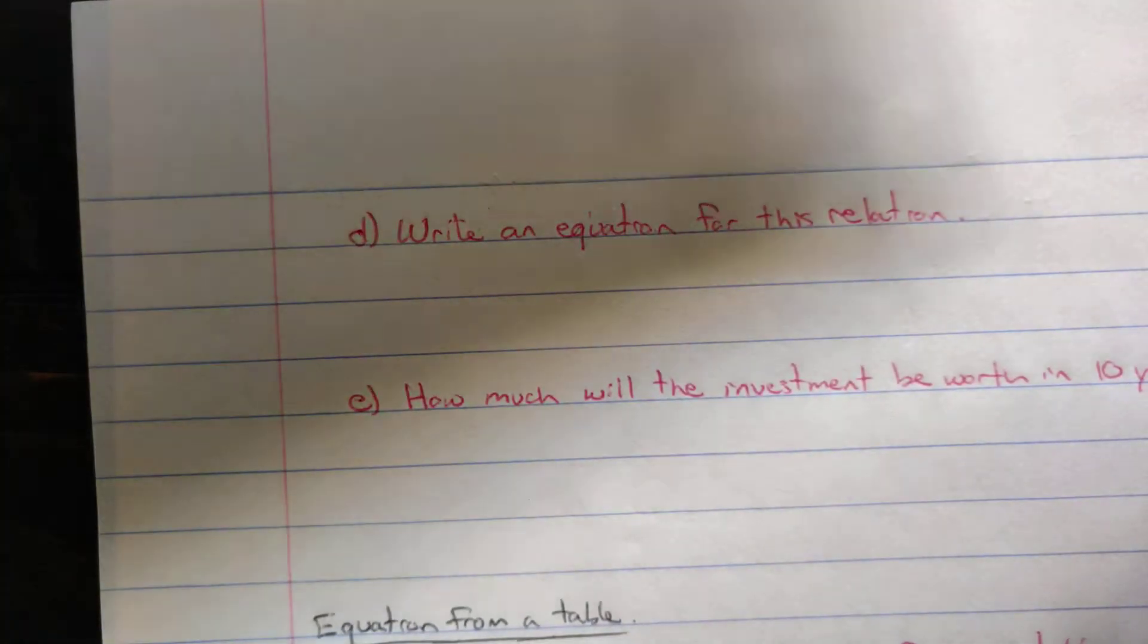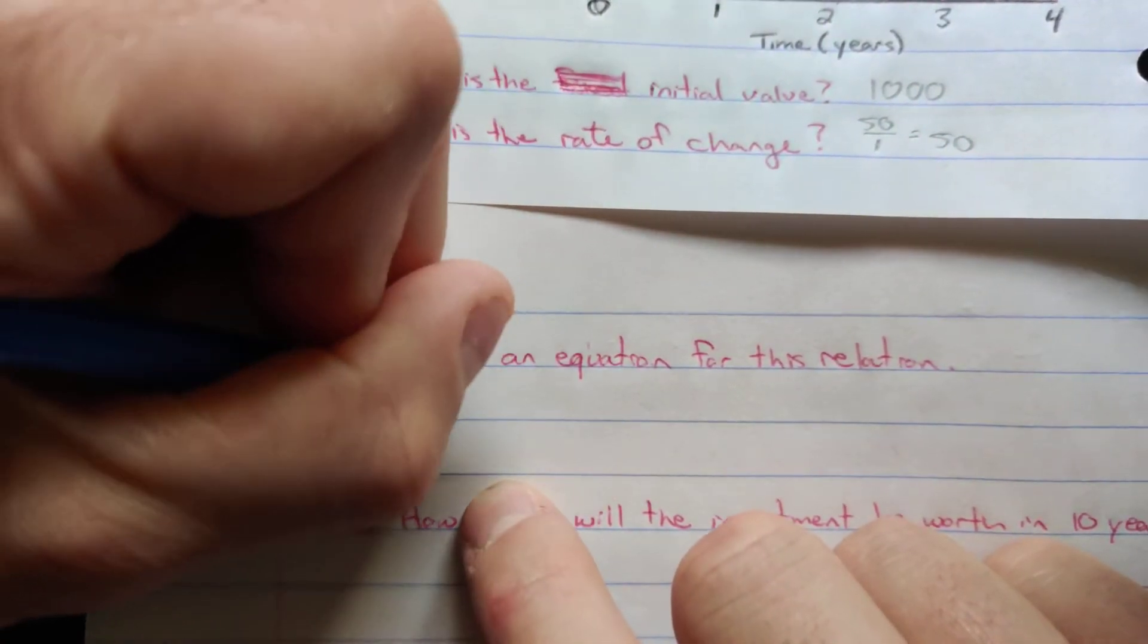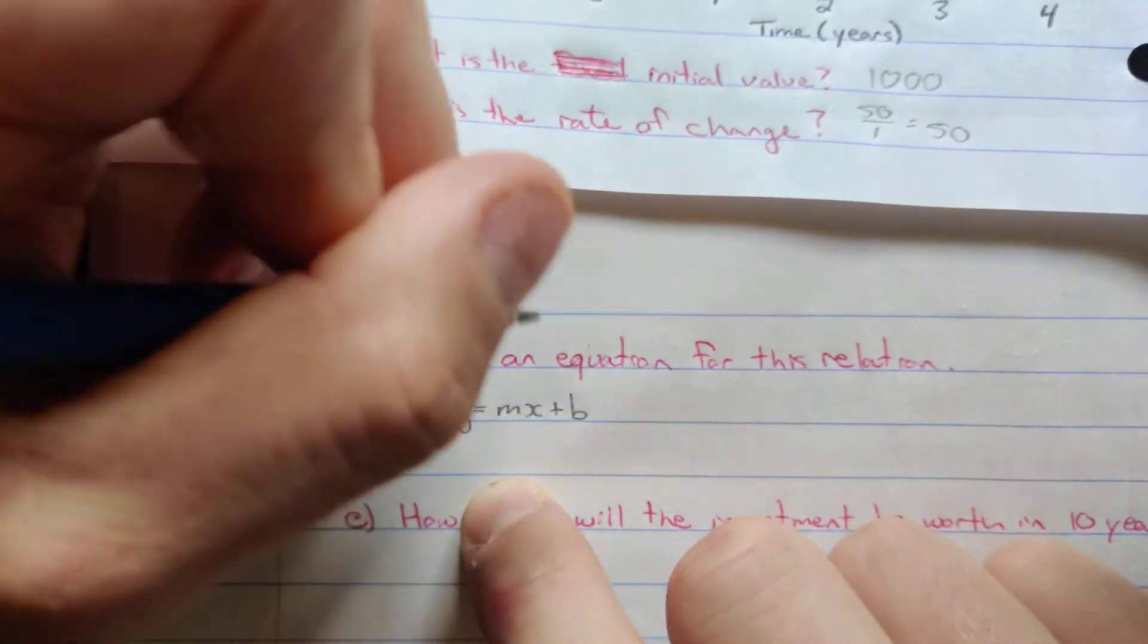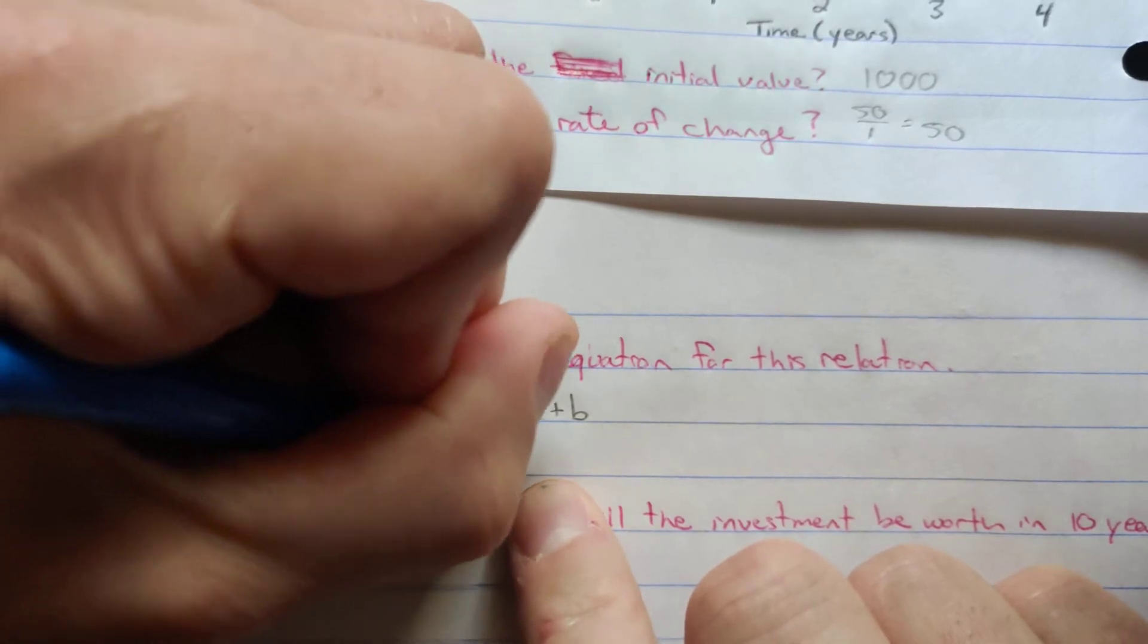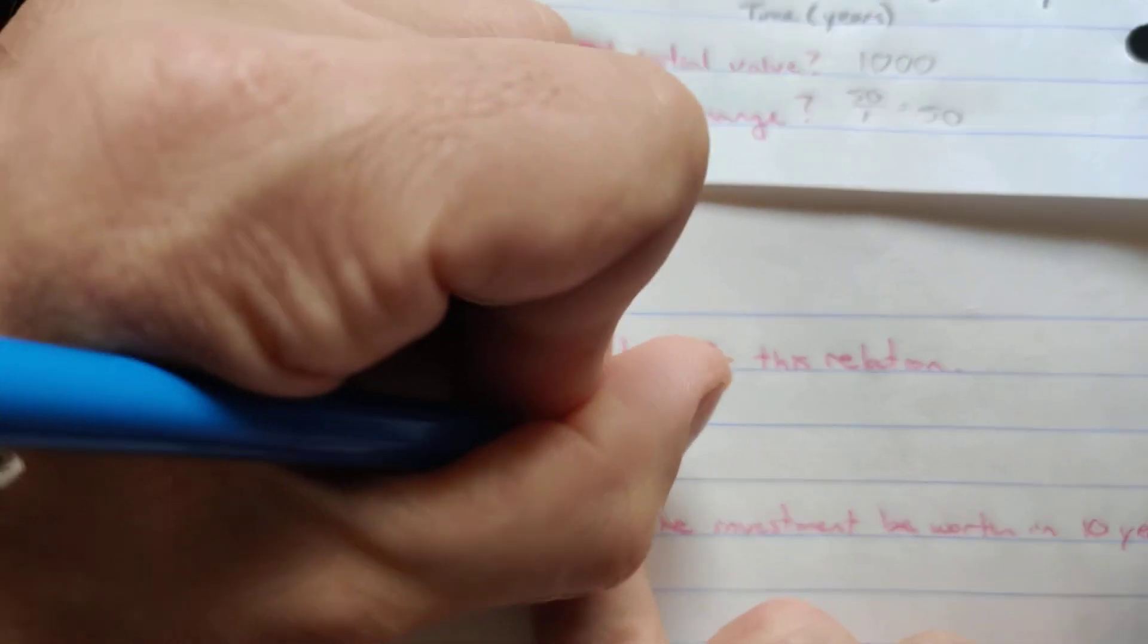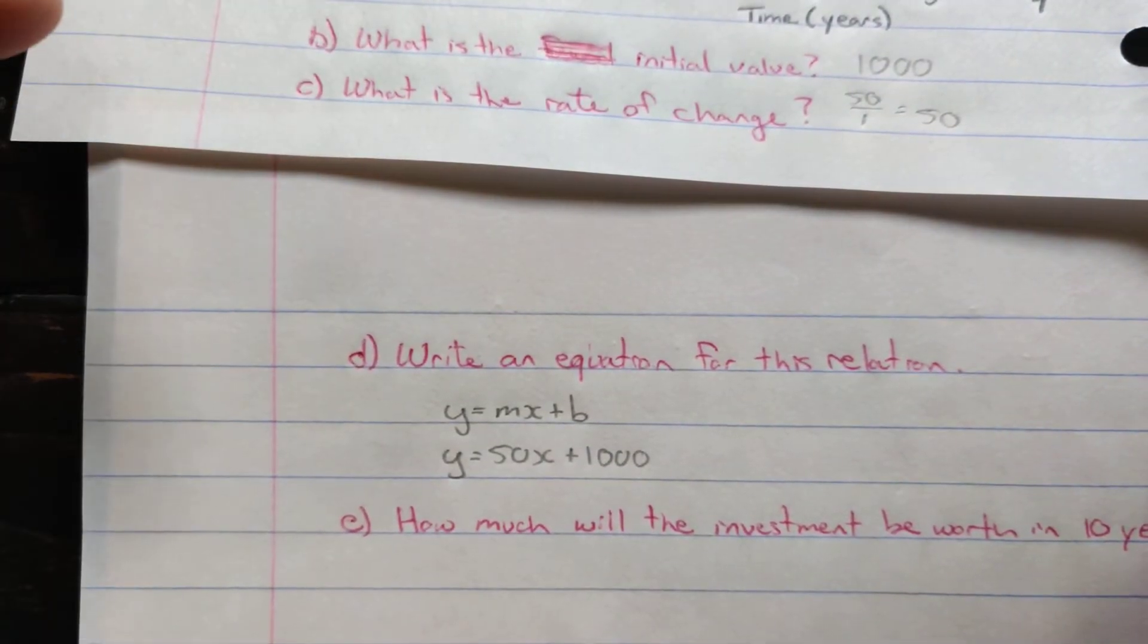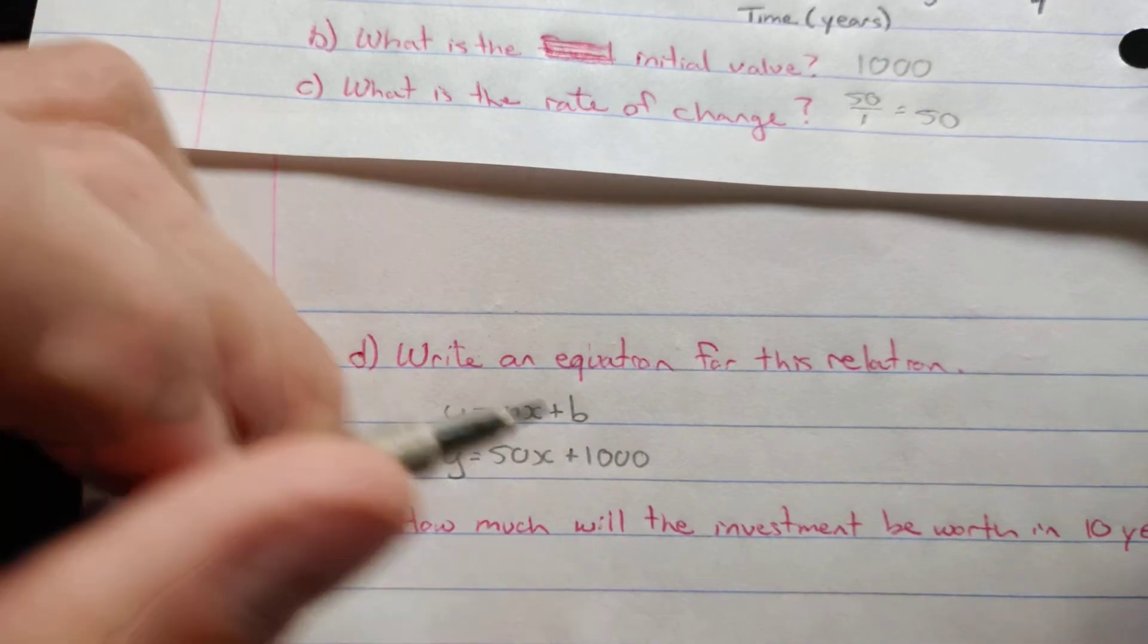We want to write an equation for this relation. So if we look at that, we have our formula in general is y equals mx plus b. Well, our rate of change we said was 50. So y equals 50x. And then our initial value is 1,000, so plus 1,000. If you know, if it was a negative initial value, if it was initial value at negative 10, we would put minus 10 as our initial value. But in this case, it was 1,000.